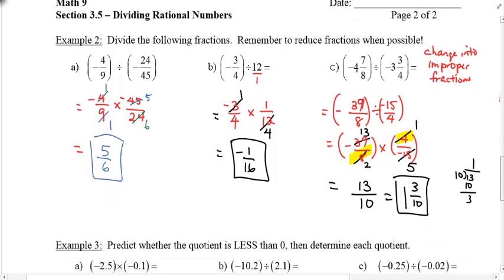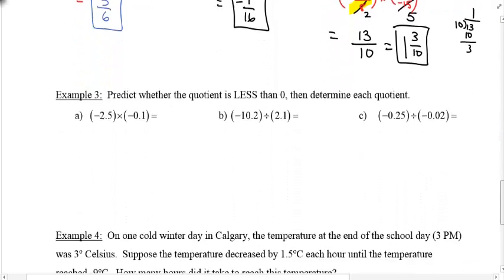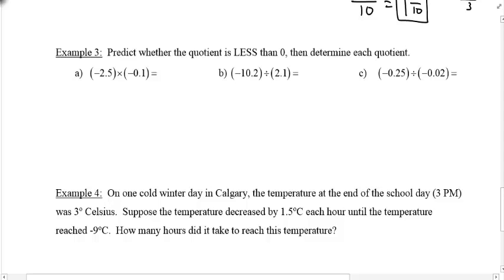And once again, rational numbers don't include just fractions. We have decimals as well. So example number 3, I'm going to ask you to predict which quotient is less than 0 this time. Less than 0 just means it's negative. And that means that the two signs must be different. So I think the only answer for that one is B. Right? Same, different, same.